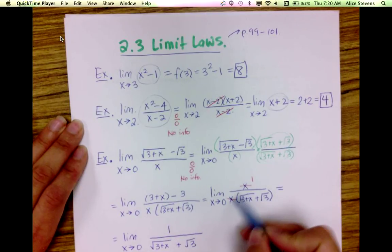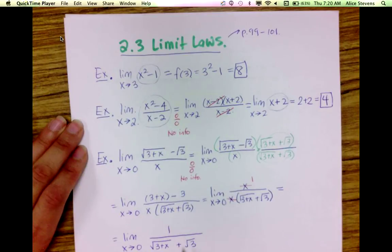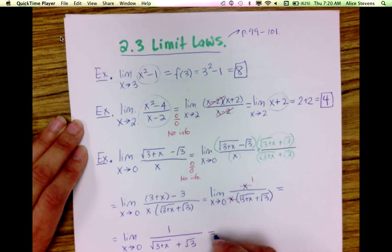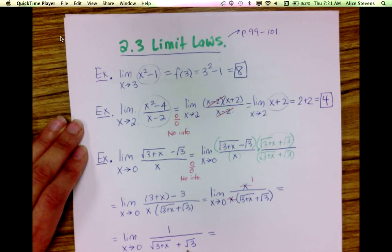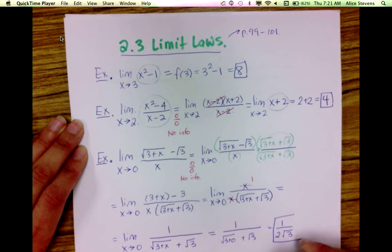That leaves me with 1 over (√(3+x) + √3). I've gotten rid of what was causing the 0 over 0 behavior. Although this function is not the same as the original, they have the same limit — because remember, the limit doesn't care what happens at 0, only what happens as we approach 0. The limit laws allow me to compute the limit using direct substitution, giving me 1 over 2√3.